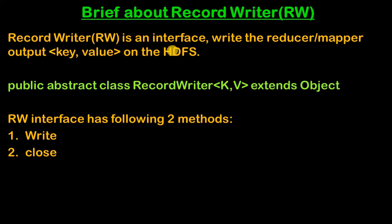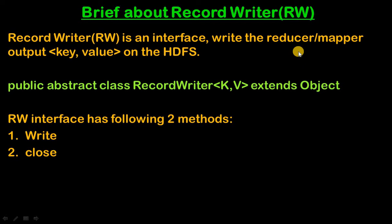Now let's see a brief about Record Writer. Record Writer is also an interface which writes the reducer or mapper output to HDFS. If there is no reducer, it writes mapper output to HDFS; if there is a reducer, it writes reducer output to HDFS. Record Writer is an abstract class with a key-value parameter that extends Object, and it has two methods.